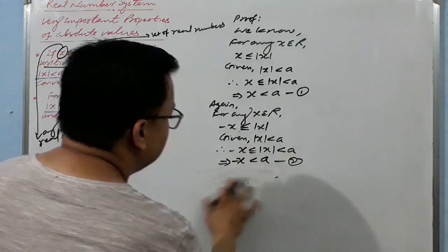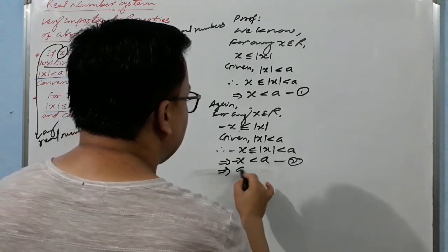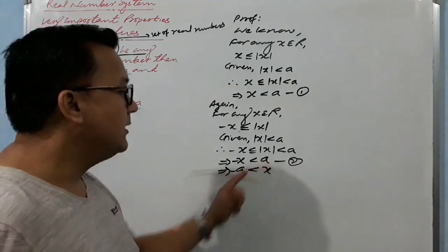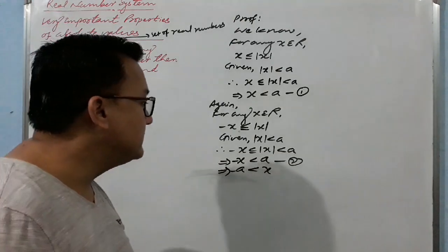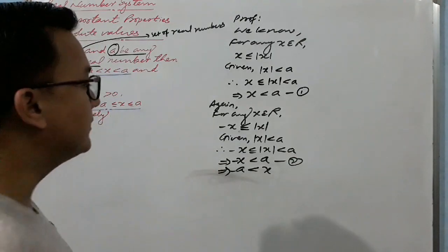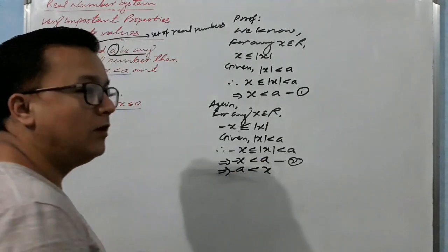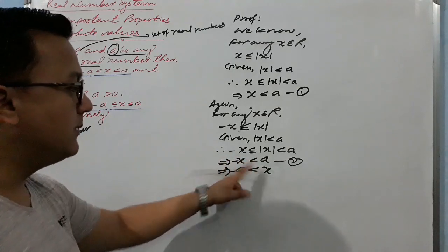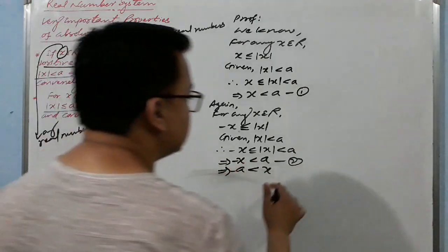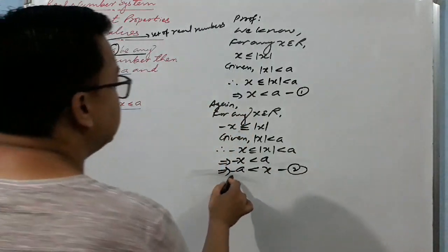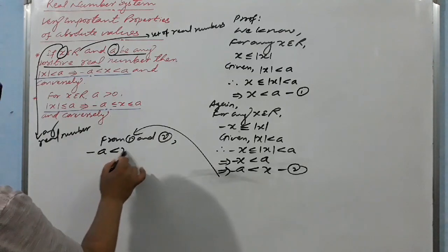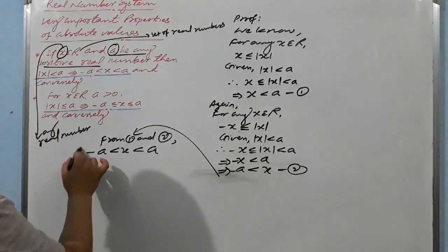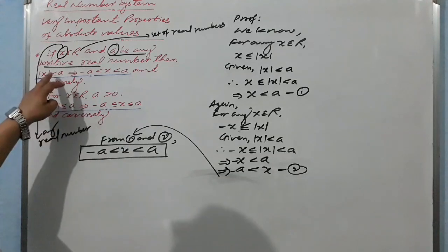From statements (1) and (2): we have X less than a, and minus X less than a. Multiplying the second by negative one (which reverses the inequality): negative a less than X. Combining both results gives us: minus a less than X less than a. This completes the first part.